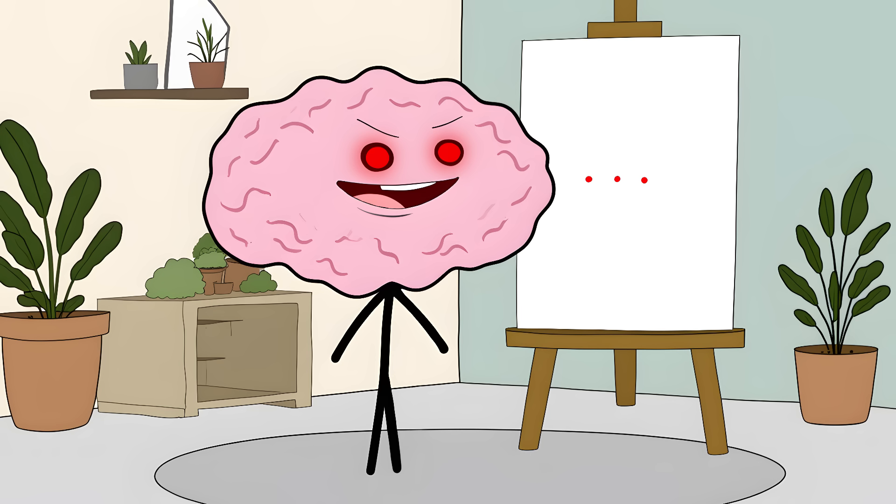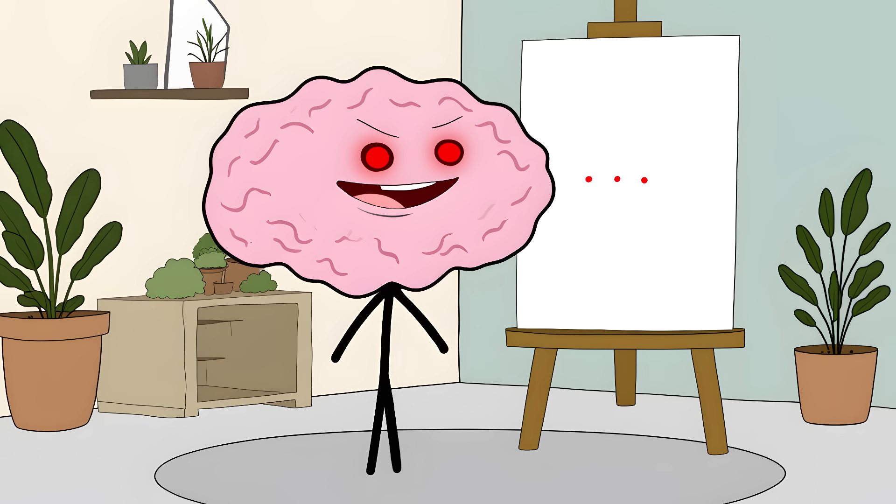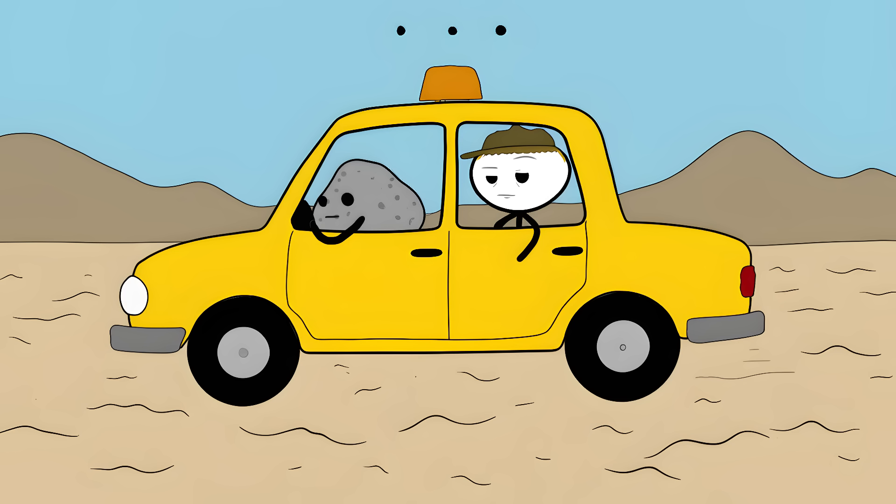These experiments prove that the colors you see aren't really there. Your brain is creating your entire visual world from scratch, and sometimes you can catch it breaking its own rules. Number six, the rocks that move themselves.